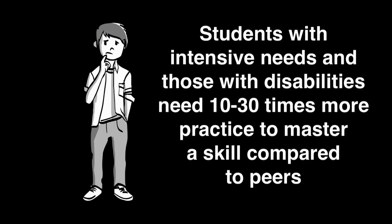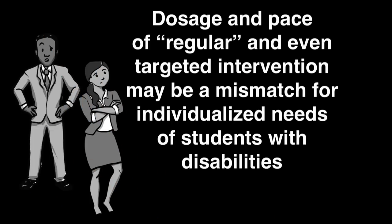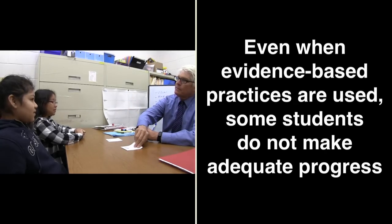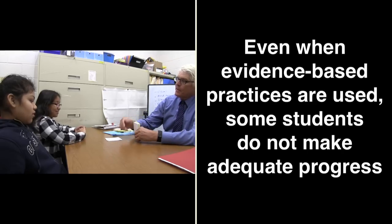Research indicates that it may take students with intensive needs, including those with disabilities, as much as 10 to 30 times more practice to master a skill compared to peers without disabilities. This means the dosage and pace of general education classroom instruction, and even some Tier 2 intervention programs, may be a mismatch for the individualized needs of many students with disabilities. Even when evidence-based practices and intervention programs are used, some students still do not make adequate progress. They require something more.